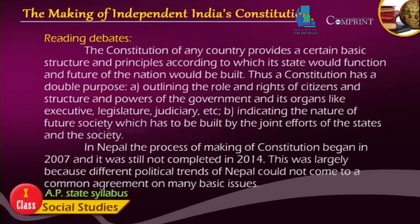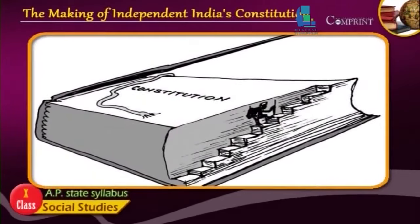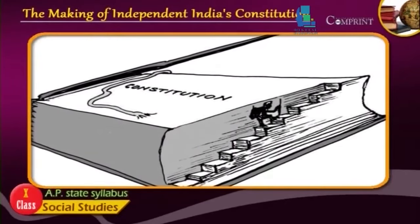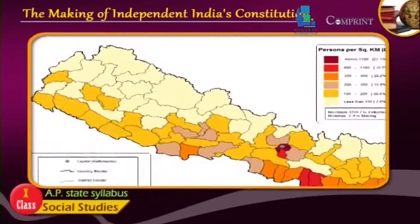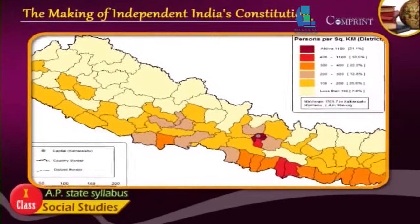Reading Debates: The constitution of any country provides a certain basic structure and principles according to which its state would function and the future of the nation could be built. Thus, a constitution has a double purpose: outlining the role and rights of citizens and the structure and powers of the government and its organs like executive, legislature, judiciary, etc., and indicating the nature of the future society which has to be built by the joint efforts of the state and the society.